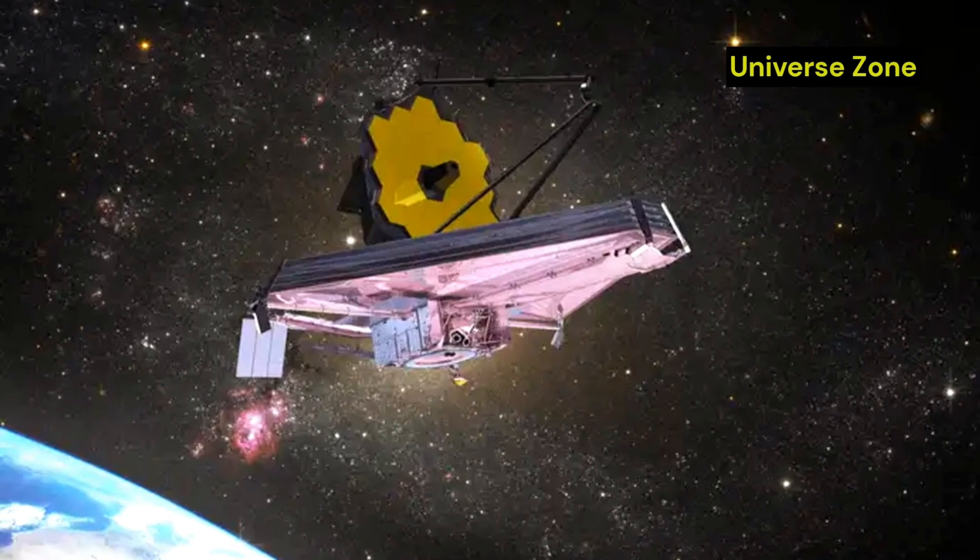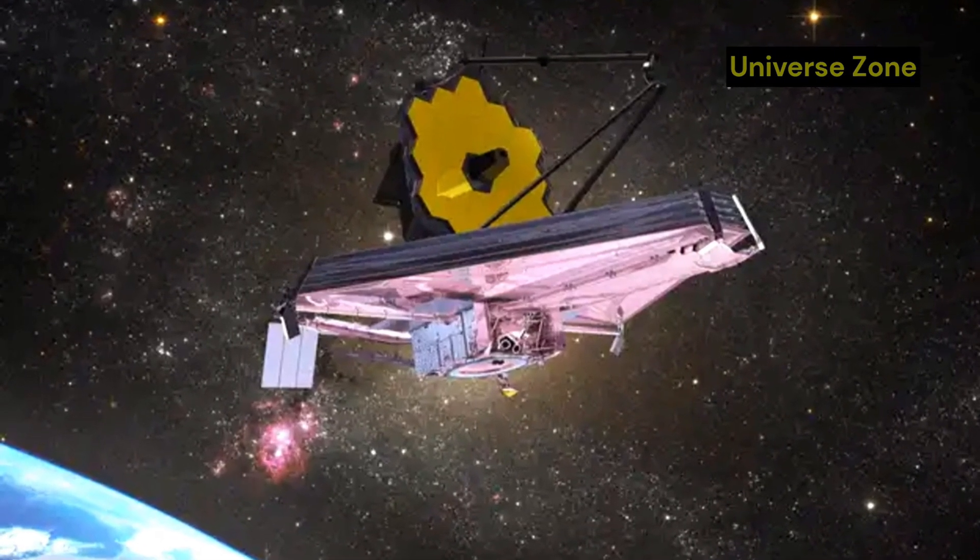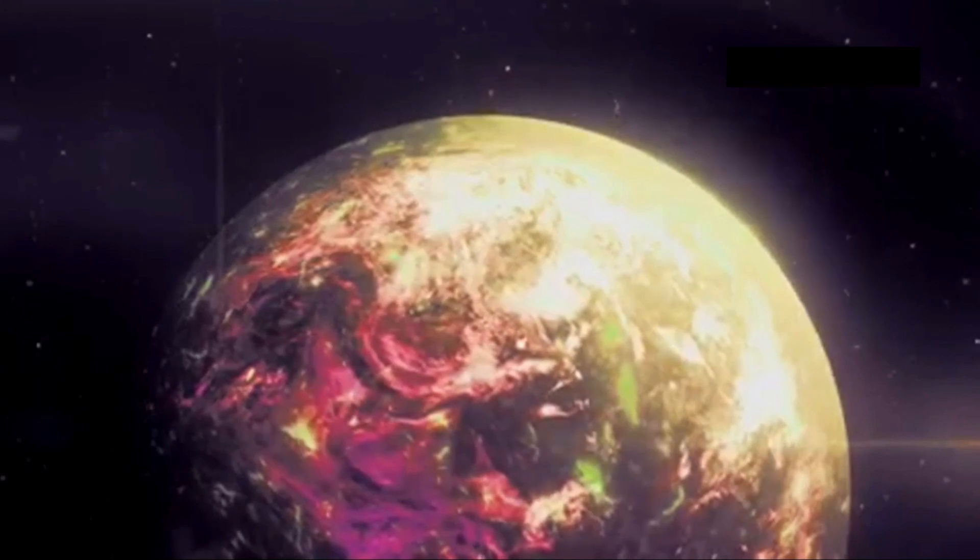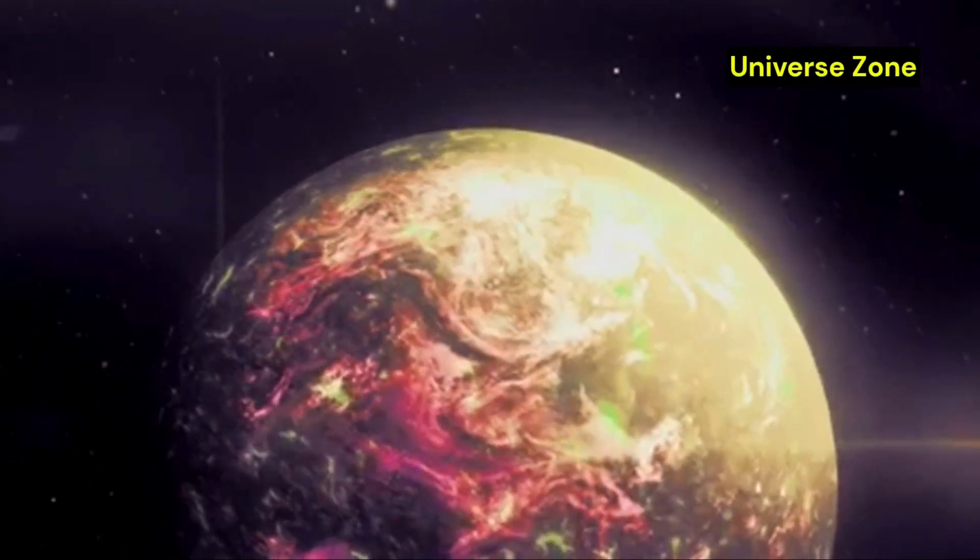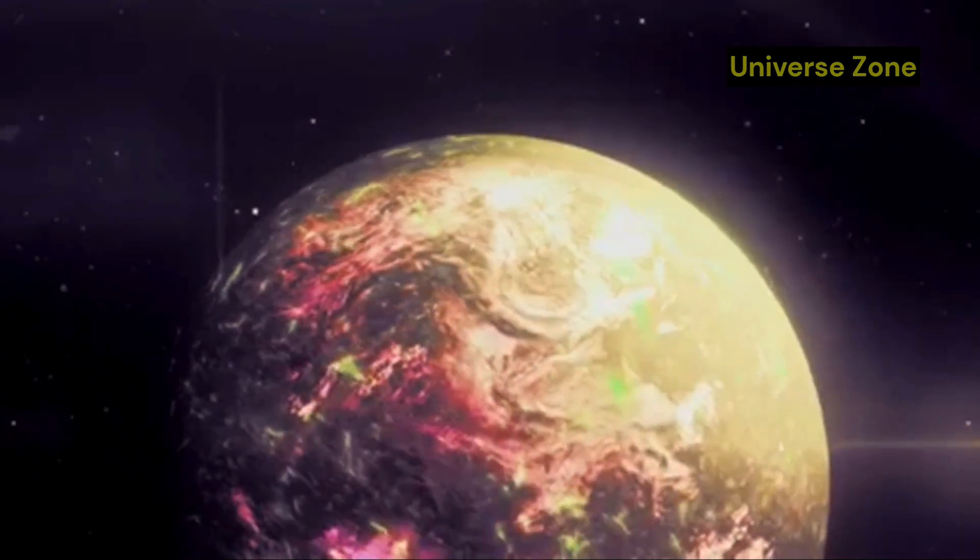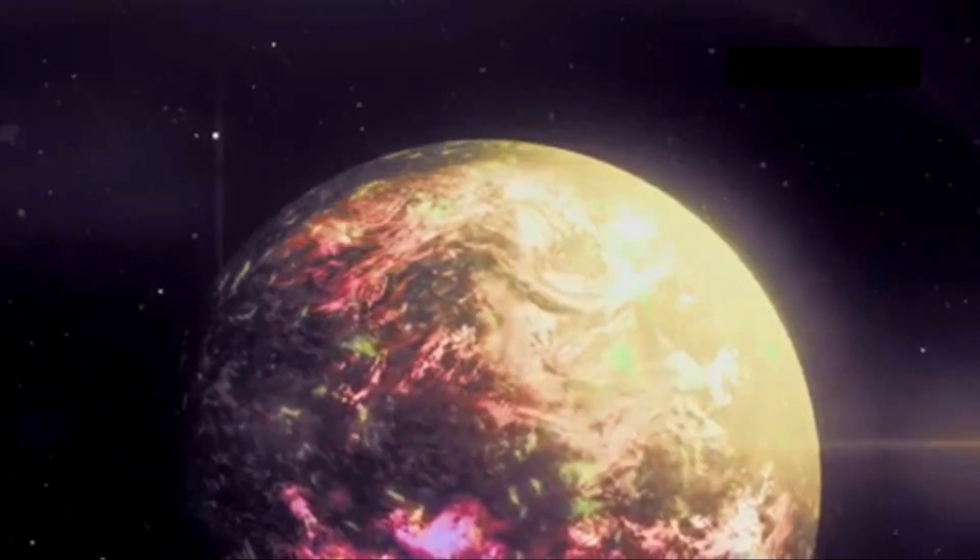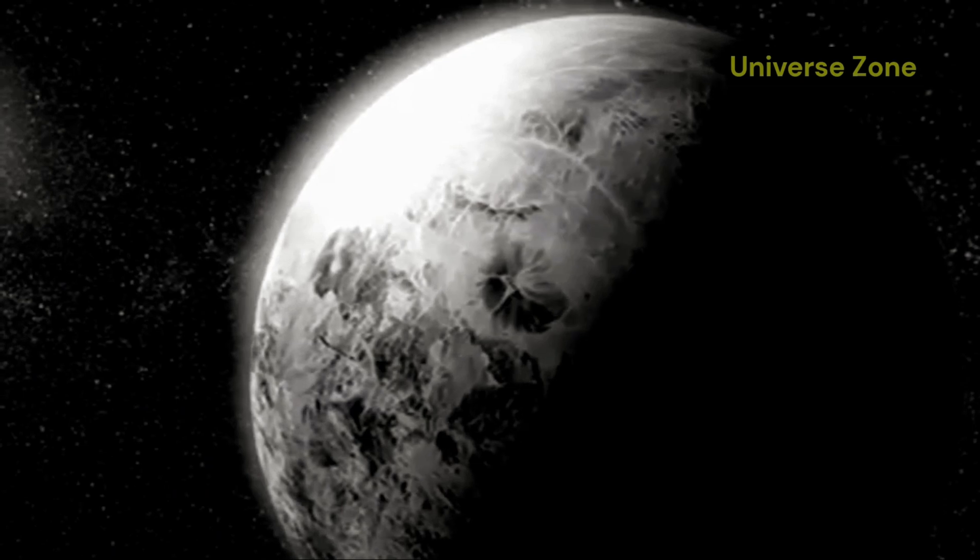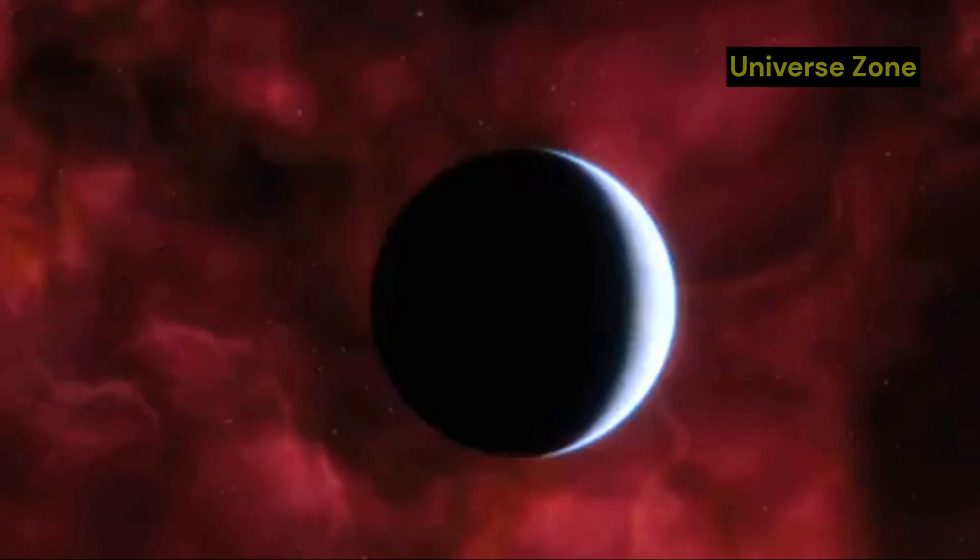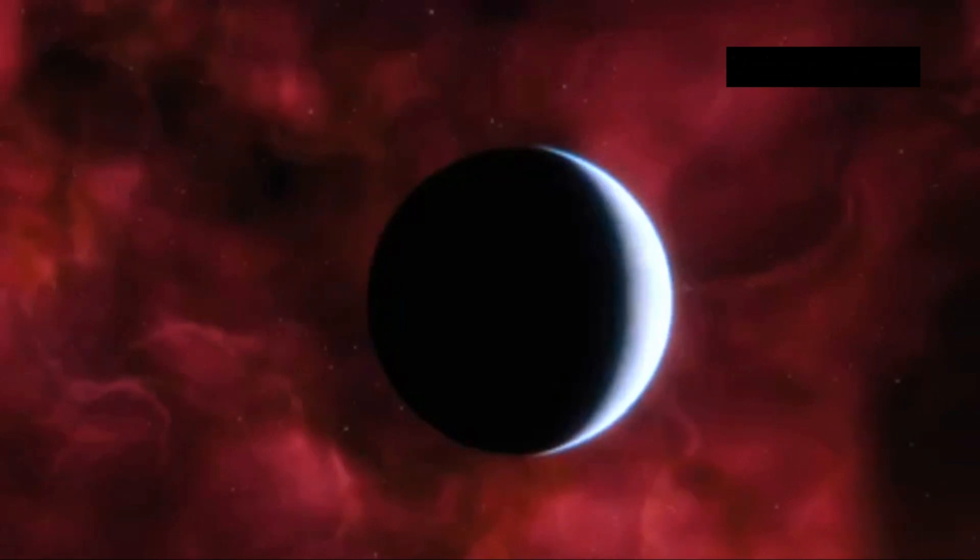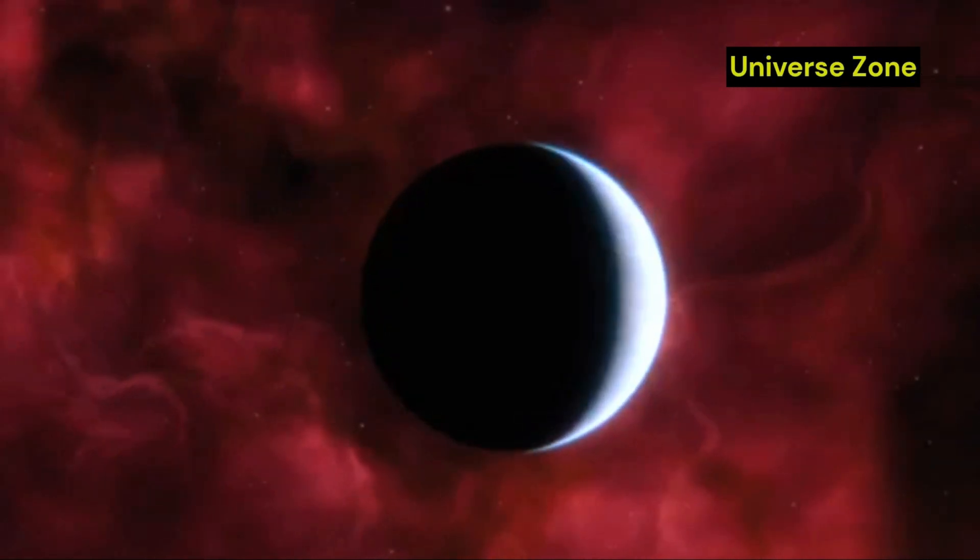The JWST observed Proxima b for a total of 40 hours. During that time, the telescope collected a wealth of data about the planet, including its temperature, its atmosphere, and its surface features. The new image of Proxima b is the clearest image of an exoplanet ever captured. It shows the planet in stunning detail and has already revealed some surprising information.